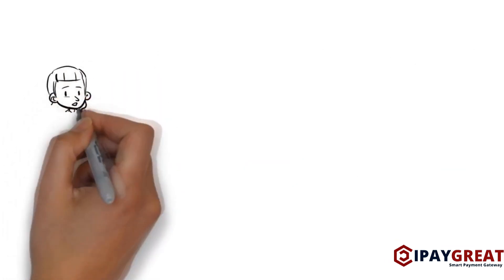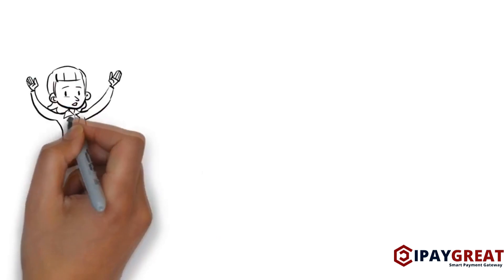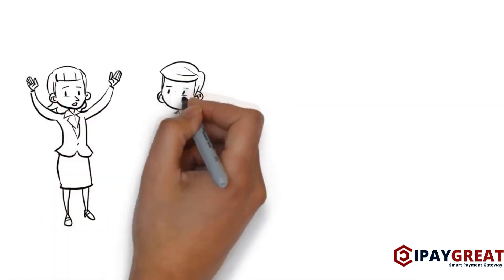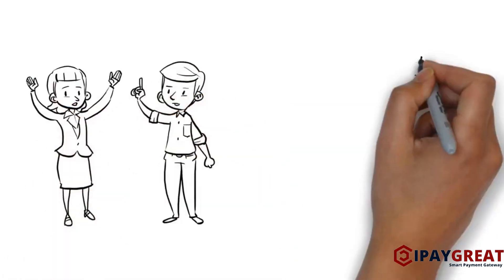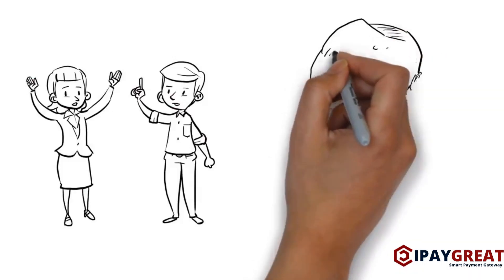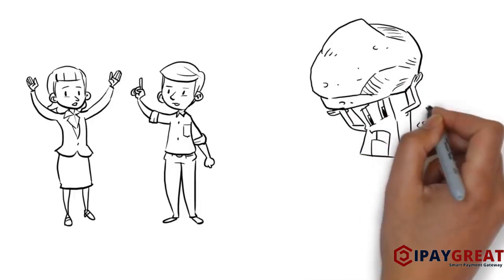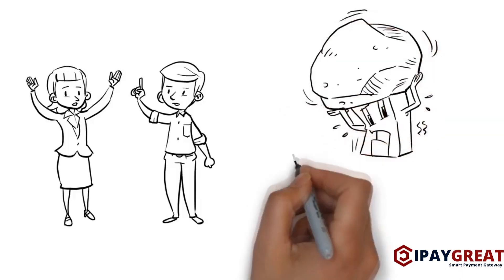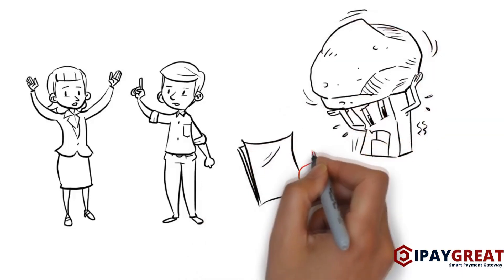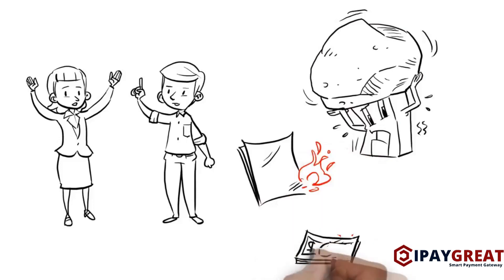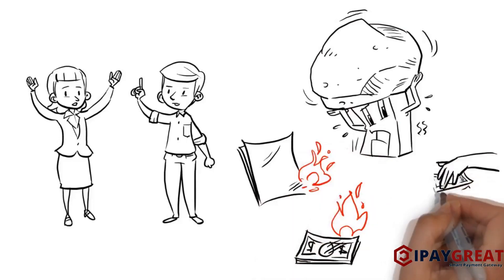I'm assuming there are penalties for noncompliance, right? Linda queries. Absolutely, says Alex. The enforcement of compliance with PCI DSS and any noncompliance penalties are carried out by the individual credit card payment brands. Entities may also suffer from diminished sales, fraud losses, and legal costs associated with the breach of cardholder data.